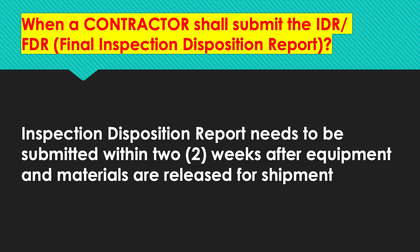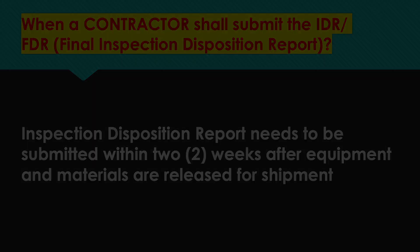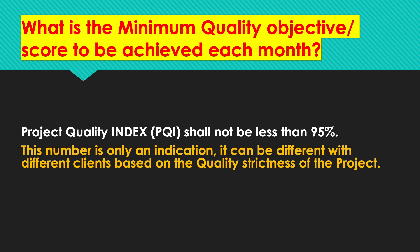When shall a contractor submit the IDR or FDR — Final Inspection Disposition Report? The IDR or FDR needs to be submitted within two weeks after equipment and materials are released for shipment. What is the minimum quality objective or score to be achieved each month? PQI shall not be less than 95% — though this number can vary by project, such as 90%, 93%, or 97%, agreed between contractor and client.